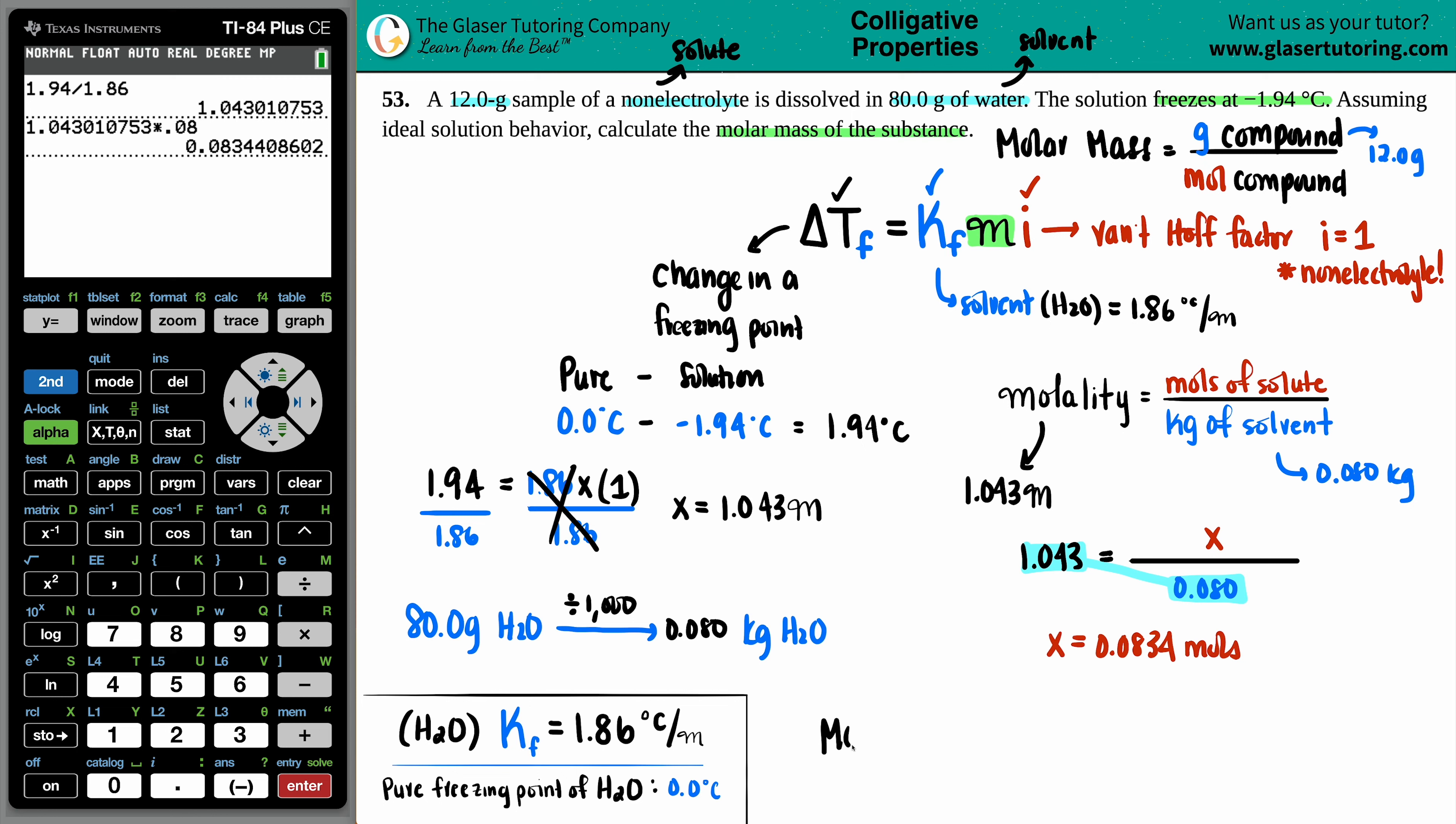So molar mass, grams over moles. Way from the beginning, we said that we had the 12.0 grams. And now we just found out that we had 0.0834 moles. So let's divide. And that is the answer. 12 divided by this number. Bada bing, bada boom. 143.8. I guess two sig figs, three sig figs, right? So maybe 144. 144 grams per mole. And that is the final answer. Box it off. We're done. That's the molar mass.